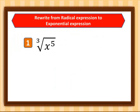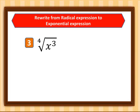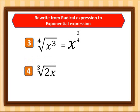Now let's rewrite from radical expression into exponential expression. First example: the base is x and the exponent is five over three. Second example: the base is four and the exponent is one over five. Third example — fourth root of x cubed: the base is x and the exponent is three over four.